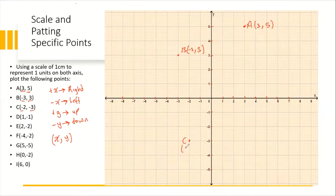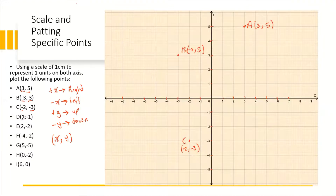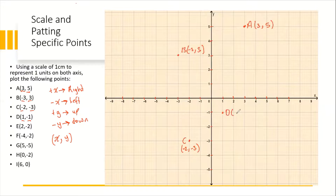The coordinate of Point C is (-2, -3). Now to plot Point D, we have positive one and negative one, suggesting that we are going to make one movement to the right and one movement down. From the origin, we go across one to the right, then from that point we go down one, which takes us right here. Point D has coordinate (1, -1).